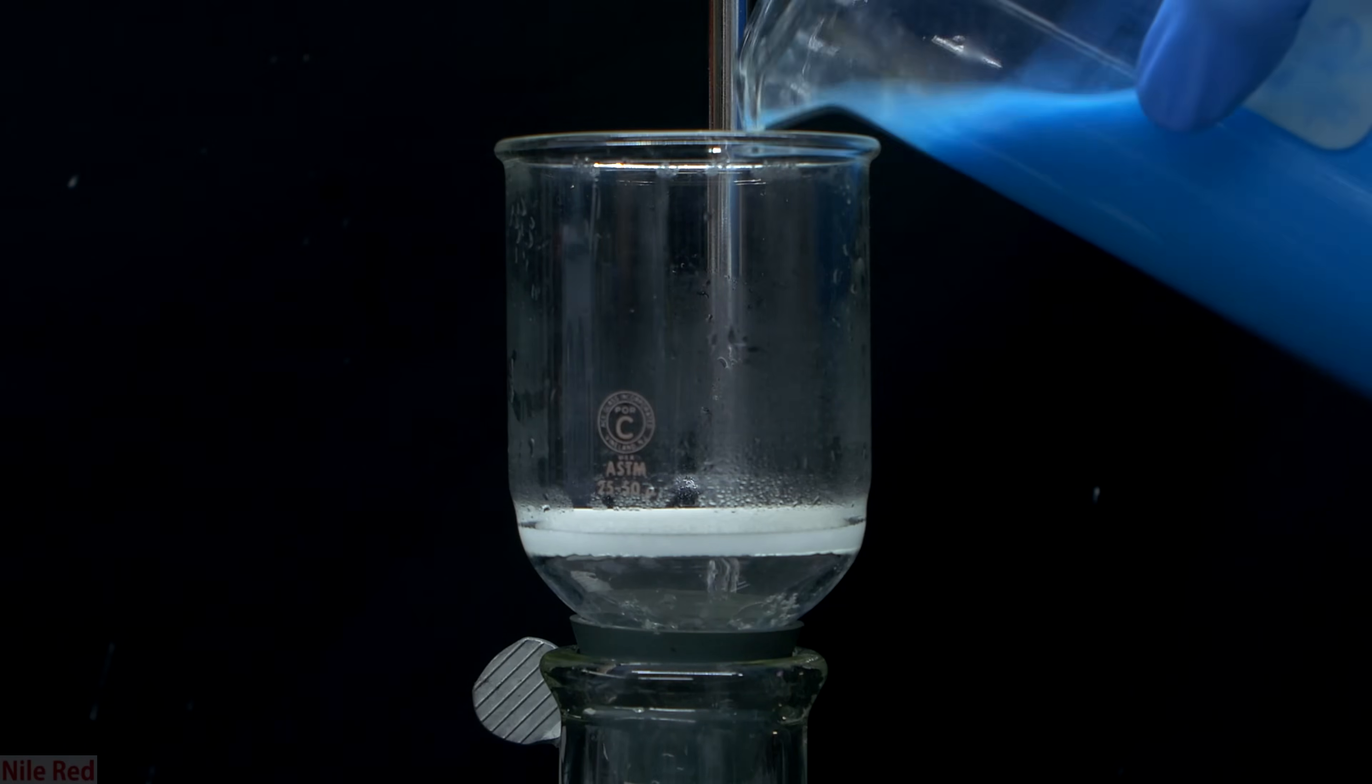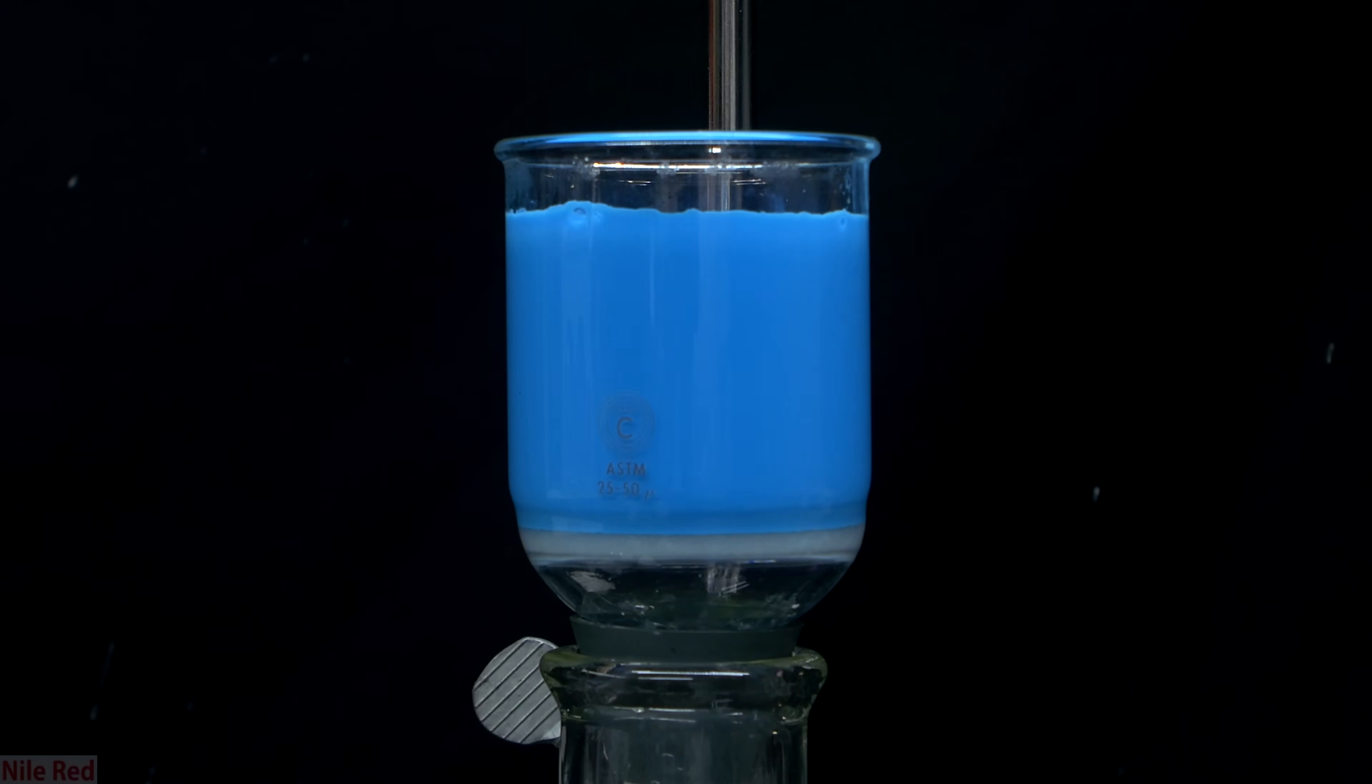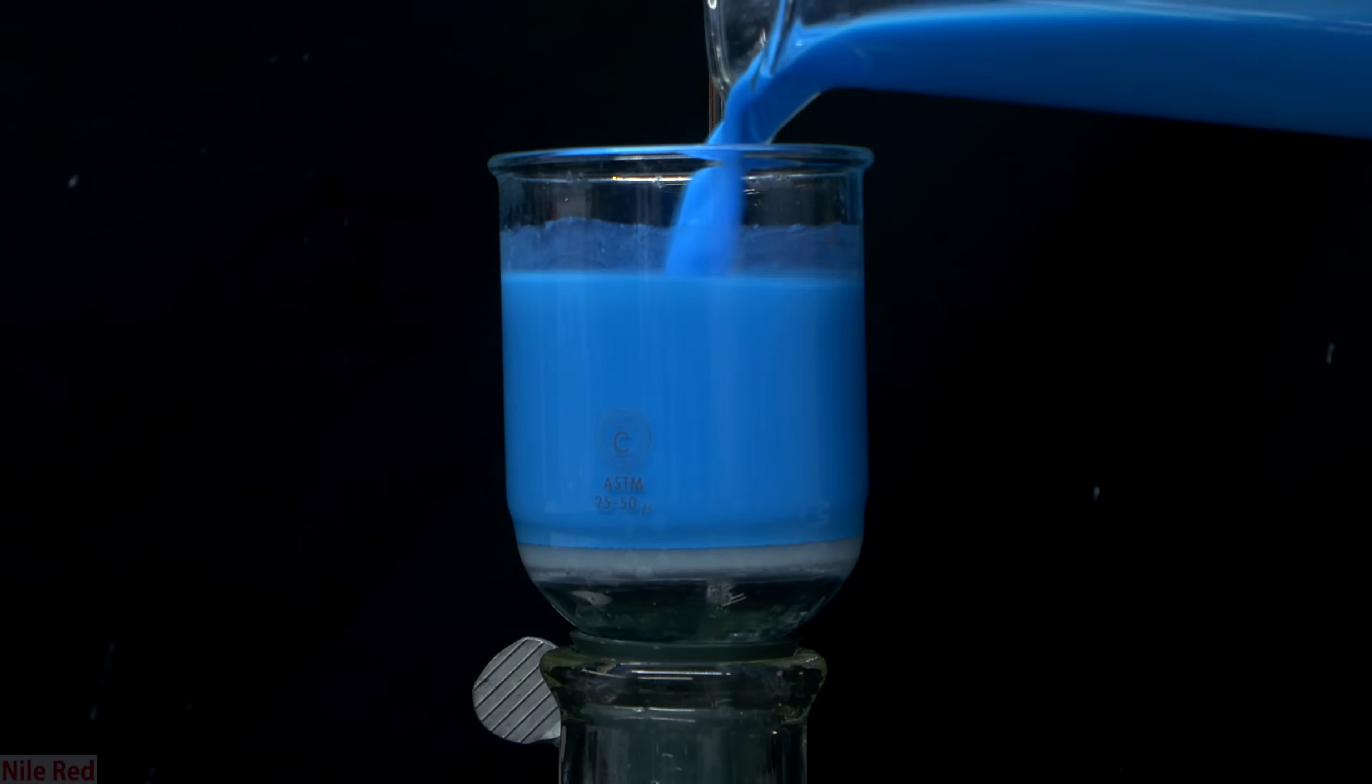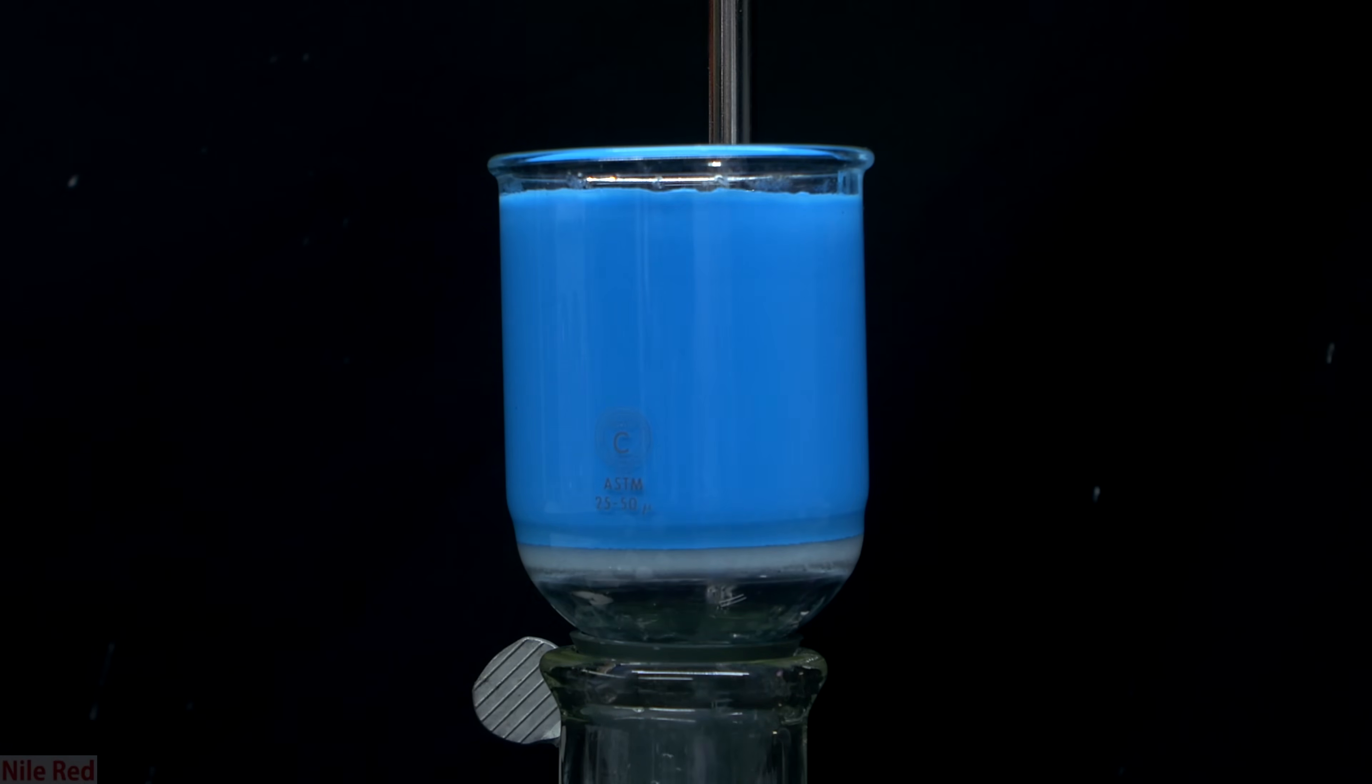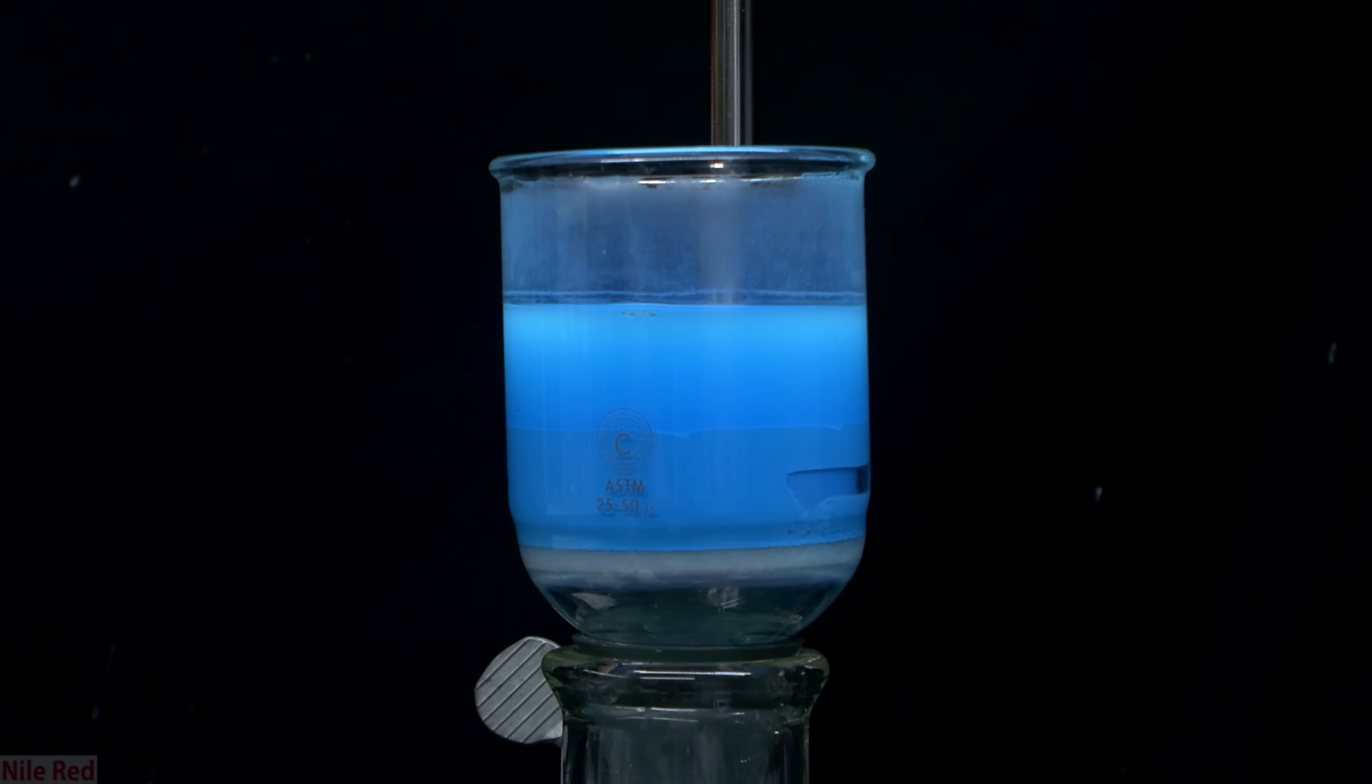For this I used a vacuum filtration setup, but in theory, you could do a gravity filtration as well. The process here is pretty simple, and I just transferred everything to the flask, pull a vacuum, and remove pretty much all of the water. Once all the water had been removed, more water was added to wash the copper hydroxide, and this process was repeated a few times.